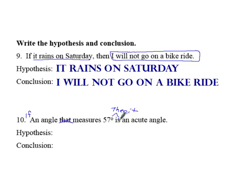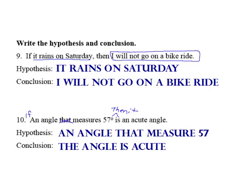So you're allowed to kind of manipulate the words a little bit. So my hypothesis could be an angle that measures 57 degrees or an angle measures 57 degrees. And my conclusion would be the angle is acute.